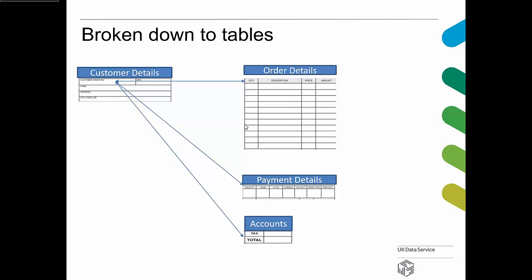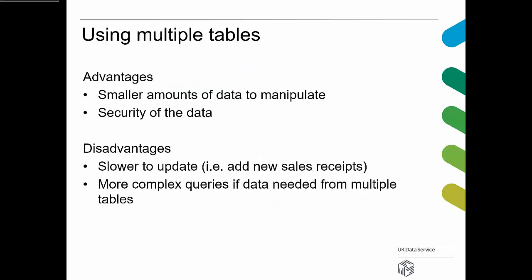Breaking data into tables hopefully reduces the amount of data you need to process. This doesn't always work because one of the key things about a relational database is the relationships themselves, which allow you, when needed, to join two or three tables together to get a larger set of information.